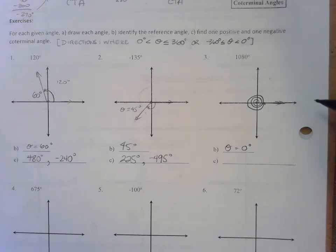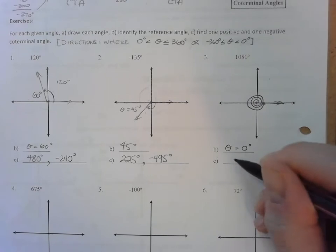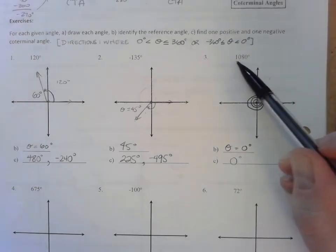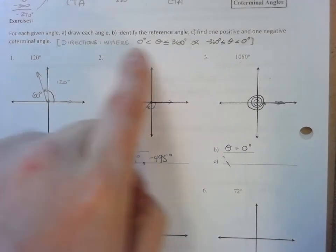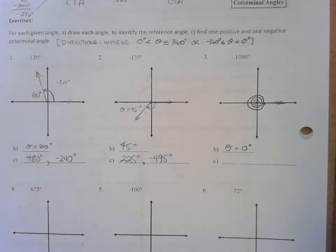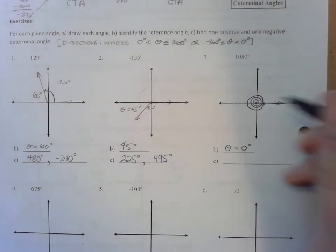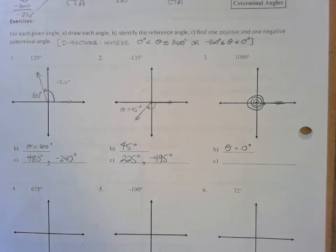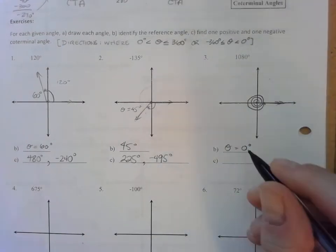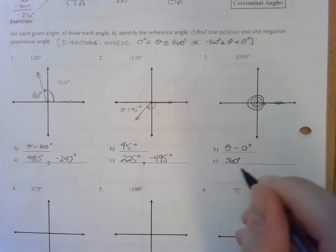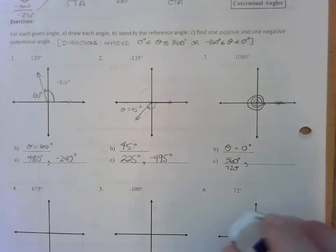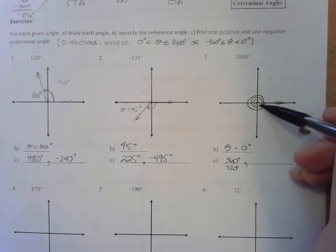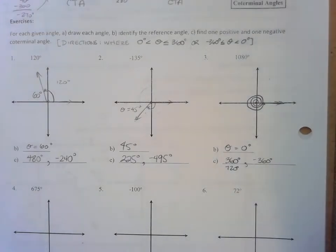Let's find a positive and a negative coterminal angle for 1080. Can I say 0 is a positive or negative coterminal angle? Since it's neither positive nor negative, we need something between 0 and 360 or between negative 360 and 0. Subtracting 360 multiple times: positive 360 degrees is a positive coterminal angle, or 720. For a negative coterminal angle, we can use negative 360.